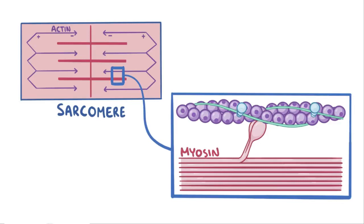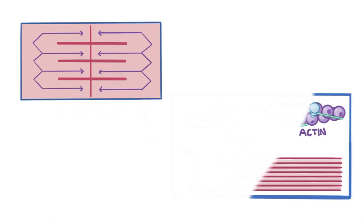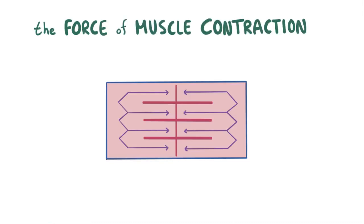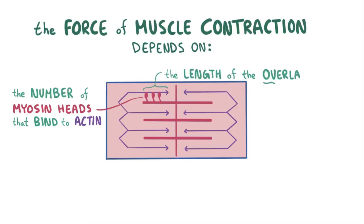Attached to the M-line are the myosin filaments, which are thick bundles of myosin proteins with two globular heads. During a muscle contraction, the myosin heads grab onto the actin filaments and pull them towards the M-line, which brings the two Z-discs closer together. Overall, the amount of tension developed, or the force of muscle contraction during systole, depends on the number of myosin heads that bind to actin, and this number directly depends on the length of the overlapping section between actin and myosin filaments.